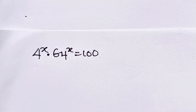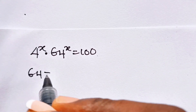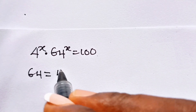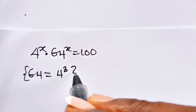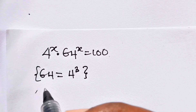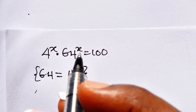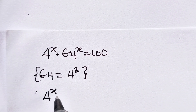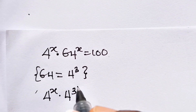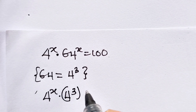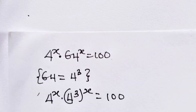First, I want us to recall that 64 is 4 to the power of 3. Therefore, we can rewrite this as 4 to the power of x multiplied by 4 to the power of 3, equal to 100.